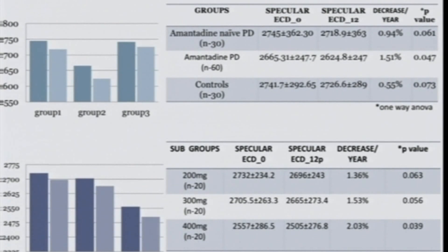For statistical analysis, chi-square test and independent T-test were used for demographic data comparison, and one-way ANOVA was used for endothelial cell parameters.